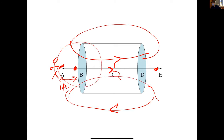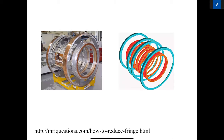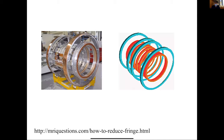A student asks whether the wrench would keep oscillating between the two sides due to the magnetic field. In principle it could oscillate many times, but gravity is also acting on it, and a wrench has many degrees of freedom, so it would tend to hit the magnet walls and dissipate energy. Eventually gravity would bring it down.